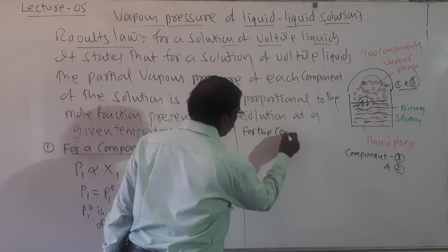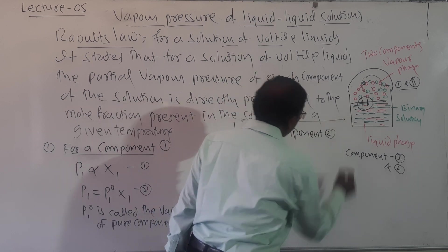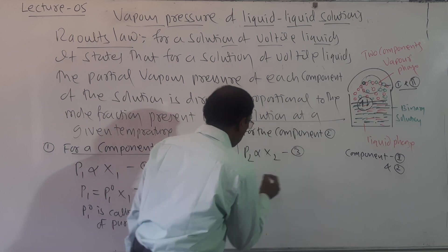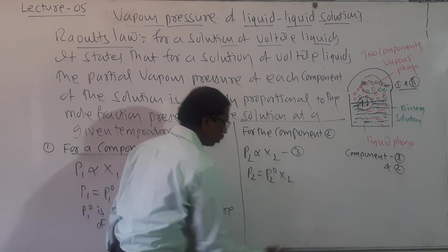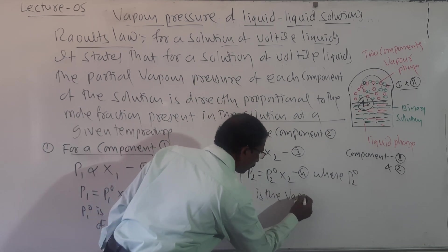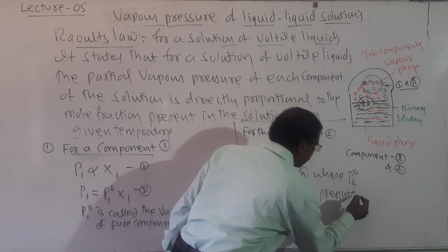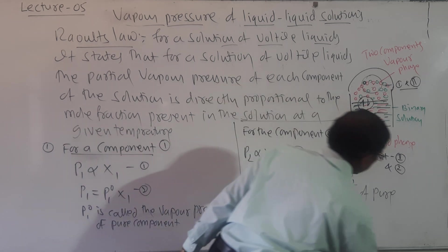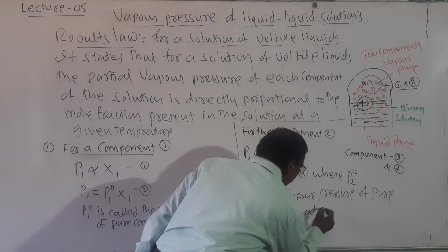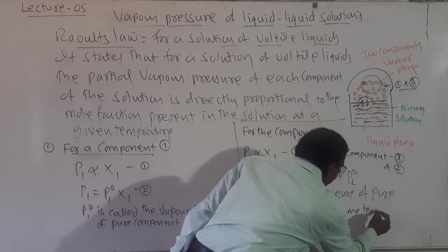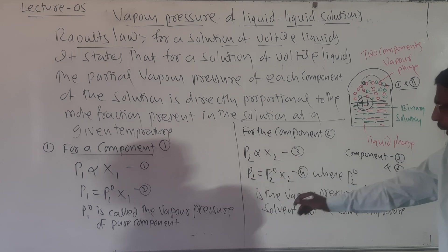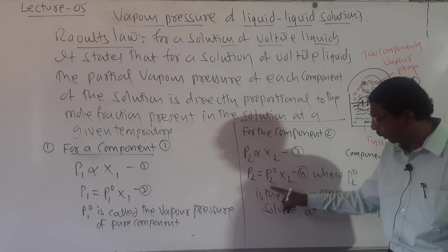Similarly, for component 2: P2 is proportional to x2, and P2 = P2° · x2, where P2° is the vapor pressure of the pure solvent at the same temperature. So P1 = P1°x1 and P2 = P2°x2.